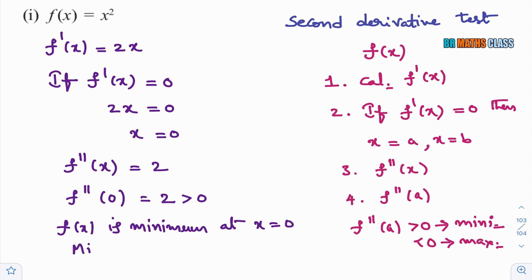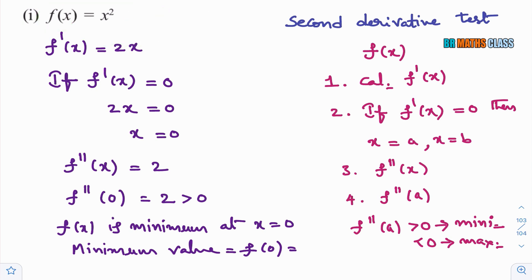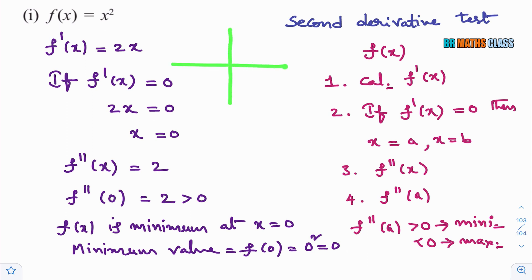The minimum value is f(0). Since f(x) = x², f(0) = 0² = 0. So this function attains minimum value at x = 0 and that minimum value is also 0. Graphically, if we observe x², taking y = x², this is a parabola opening upward. It attains minimum value at the vertex point (0, 0), as confirmed by the graph.